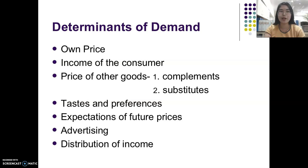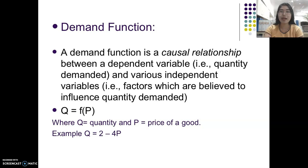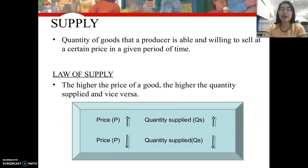The determinants of demand include: the own price of the product, income of the consumer, price of other goods (complements or substitutes), taste and preferences, expectations of future prices, advertising, and distribution of income. The demand function analyzes the causal relationship between demand as a dependent variable and various independent variables using a mathematical equation.